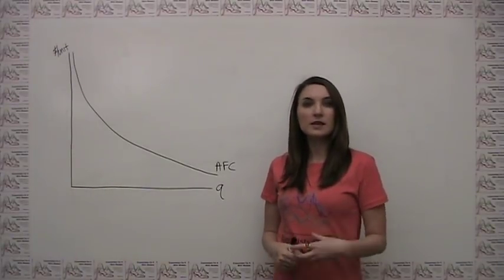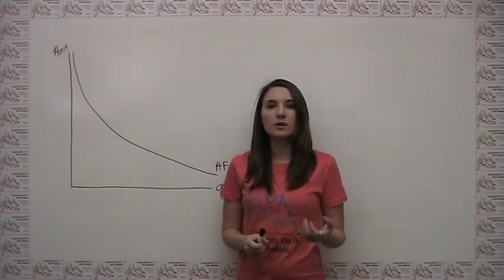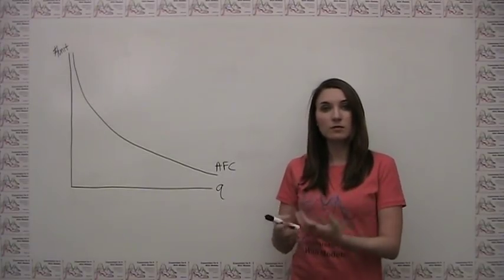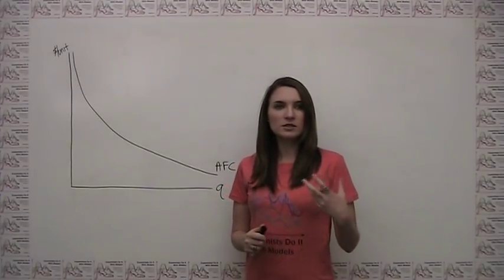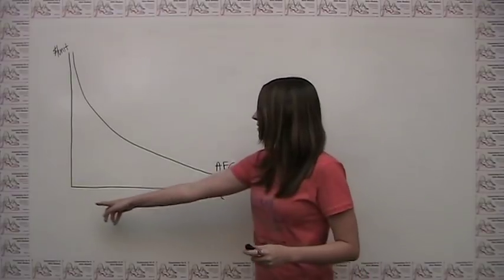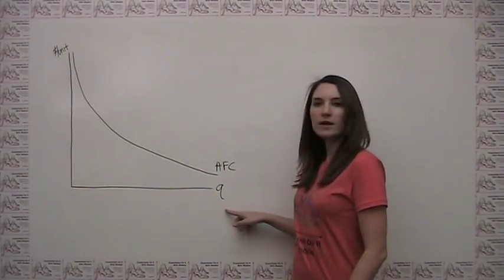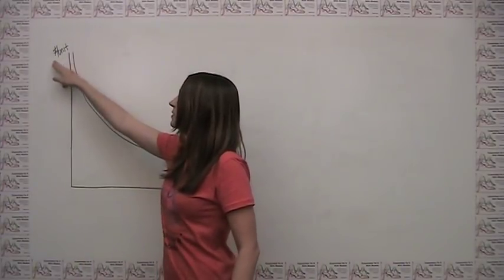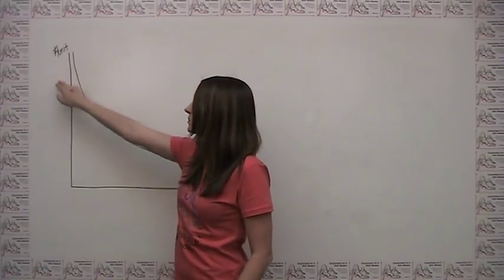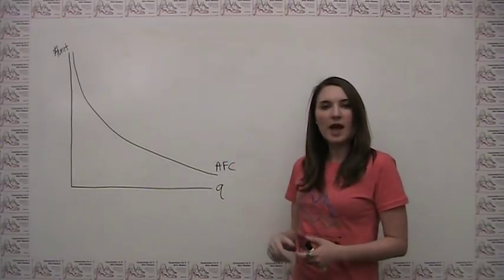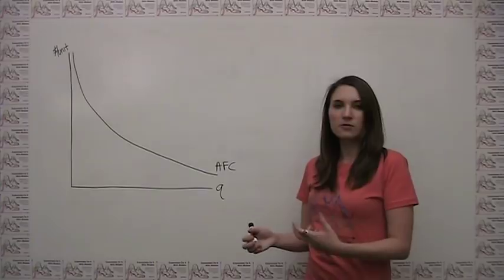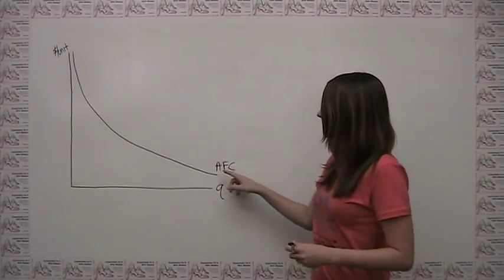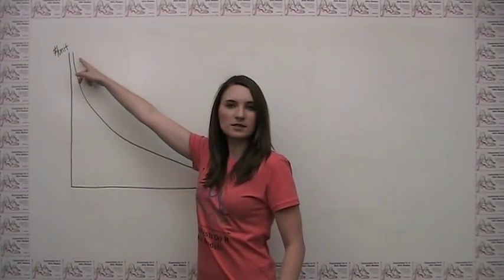It's also pretty typical to see multiple cost curves on the same graph, usually those representing average fixed cost, average variable cost, average total cost, and marginal cost. For these cost curves, because they're all in terms of dollars per unit, we have quantity on the x-axis and dollars per unit on the y-axis. Average fixed cost is just total fixed cost divided by quantity — total fixed cost is a constant number, so average fixed cost is a constant divided by quantity.